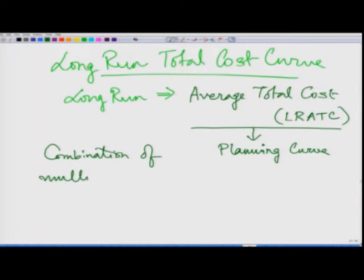The long run average total cost shows the per unit cost for production over a longer period of time, where all inputs are variable. Based on plant size — meaning the amount of capital and labour — and the desired outcome, LRATC is basically a combination of several short run average total cost curves.